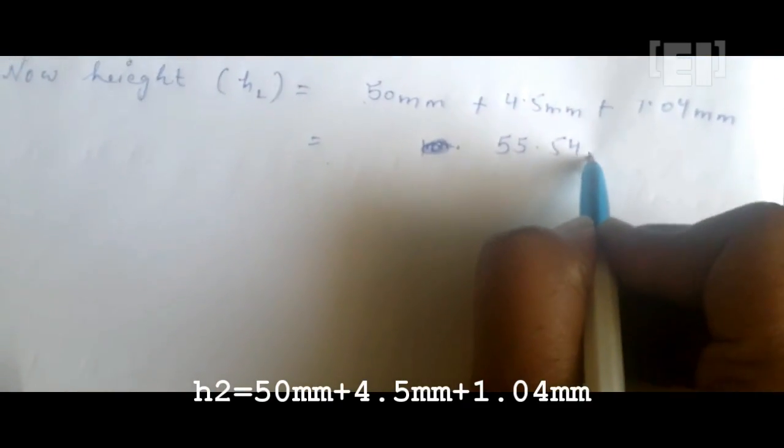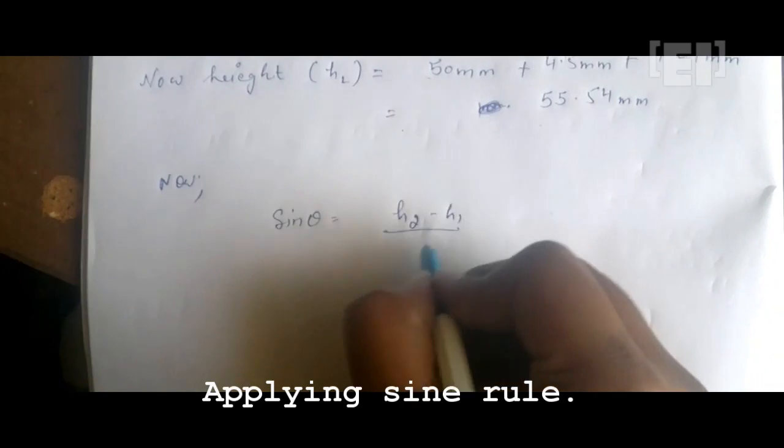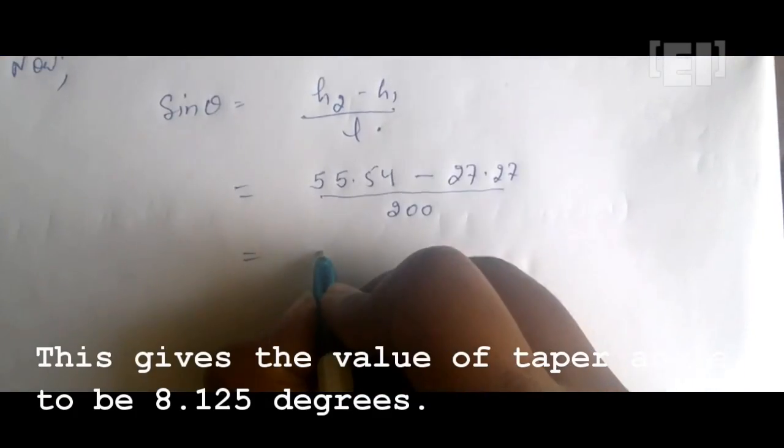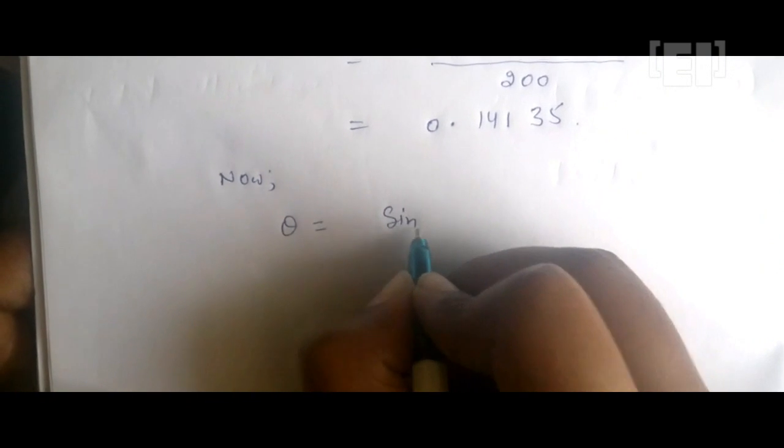We'll apply the sine rule now. It's easy. Sine theta will be equal to the difference between these two heights divided by the length of the sine bar. And the length of the sine bar has been mentioned in the starting of this video. Calculating further will give you the taper angle, that is theta. All done!